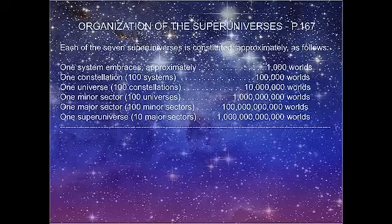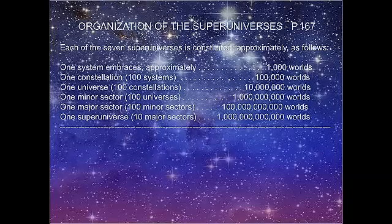This next slide is straight out of the Urantia Book - the Organization of the Super Universe, page 167. Most Urantia Book readers are well familiar with it but haven't made any effort to memorize it - and I'm not suggesting that. It's actually pretty simple: we all know the system of which Urantia is 606. A system embraces about a thousand worlds. At the very end of the list, a super universe consists of ten major sectors. Everything else in the middle is multiplications of hundreds. At the bottom we have a thousand inhabited worlds making a system; at the top, ten major sectors make up a super universe.